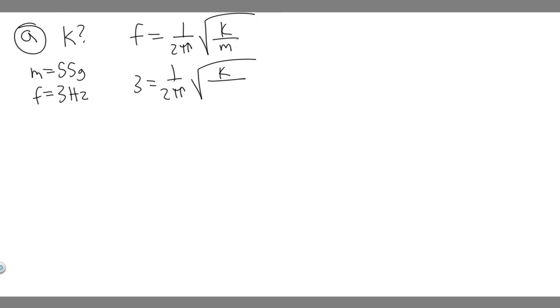But when you solve this, it must be in kilograms. So 55 grams, if you want it in kilograms, just divide by 1,000. Because there's 1,000 grams for every 1 kilogram. Dividing by 1,000, you're going to get that it equals 0.055 kg. Now we can plug it in.